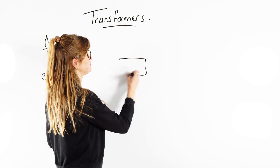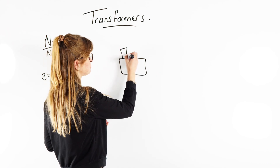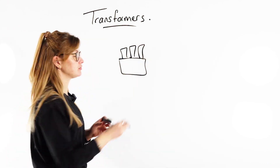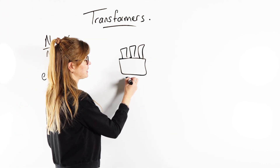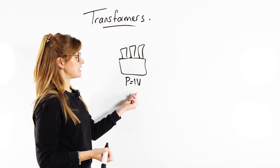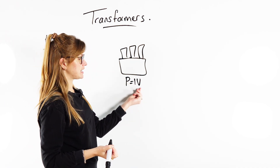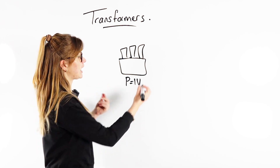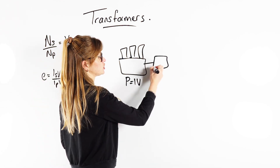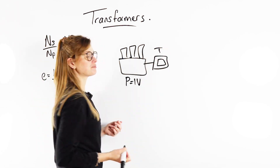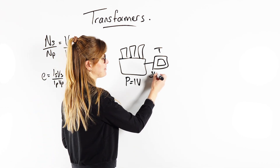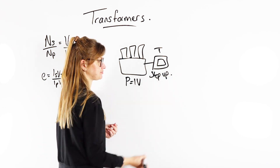Let's say you've got your power station. We know your power station is going to produce some power. P equals IV — the power of the power station is the current times the potential difference. What then happens is that power station is connected to a transformer, called a step-up transformer.